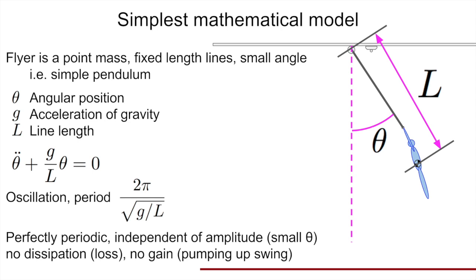That's a perfectly periodic system. The frequency is independent of amplitude — the oscillation period has no amplitude in it, just constant gravity and the length of the lines. It also includes no dissipation, no loss of energy from the system, but also no gain — no way to pump up your swing. This will be the context in which I'm going to talk about the swing in a moment.